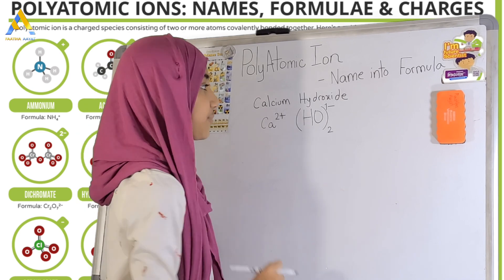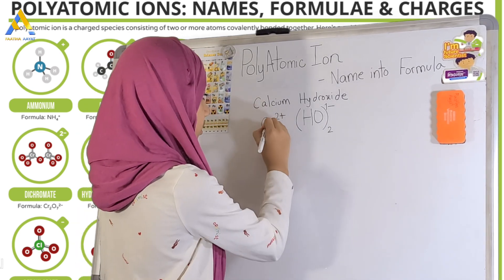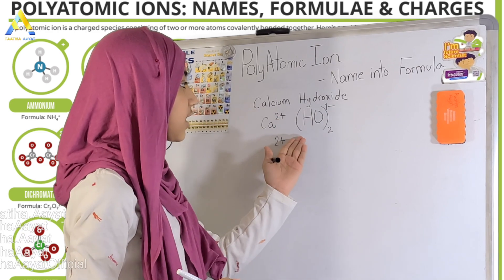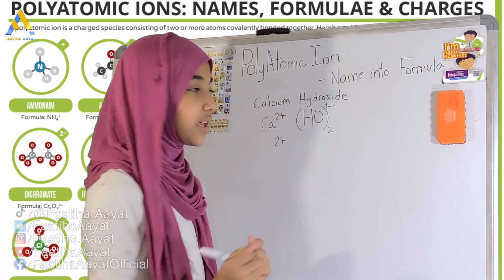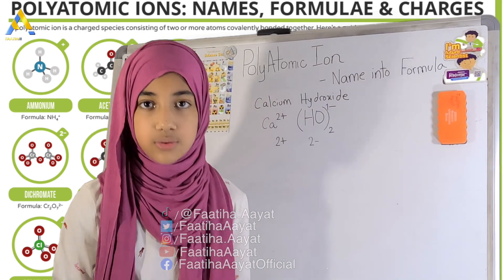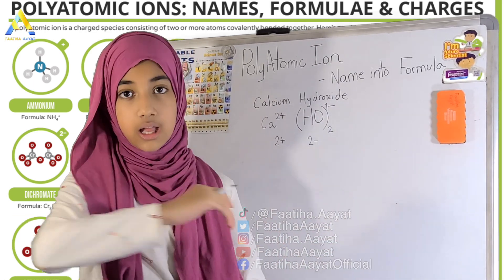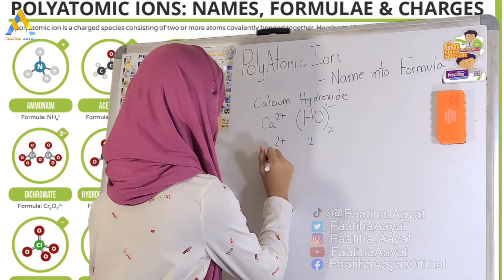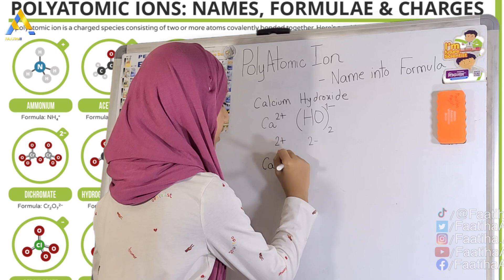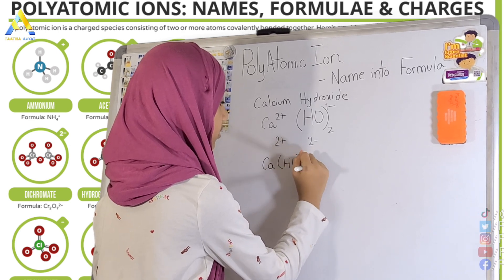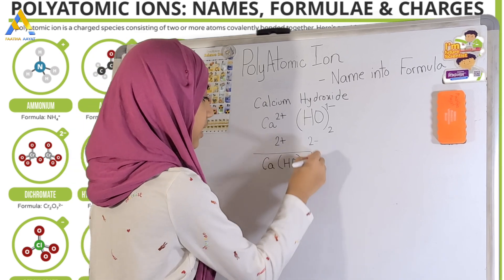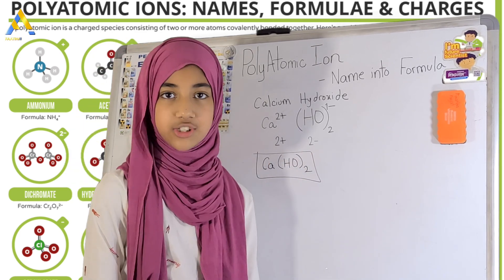Two atoms of hydroxide. Then this calcium is 2-plus, obviously the magnitude would be 2-plus. And hydroxide's 2 atoms of 1-minus would be 2-minus, which we can equally cancel out. So our formula, I'm just going to write it finally, will be Ca(OH)₂. This is our formula for calcium hydroxide.